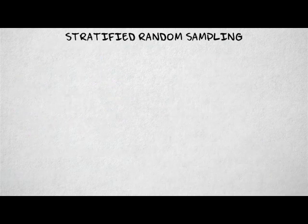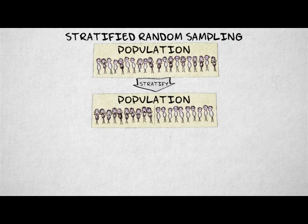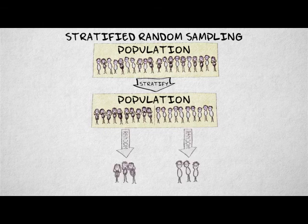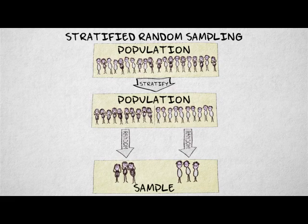In stratified random sampling, we divide the population into mutually exclusive strata. We sample from each stratum separately using simple random sampling. The separately sampled elements are added together to form the final sample.